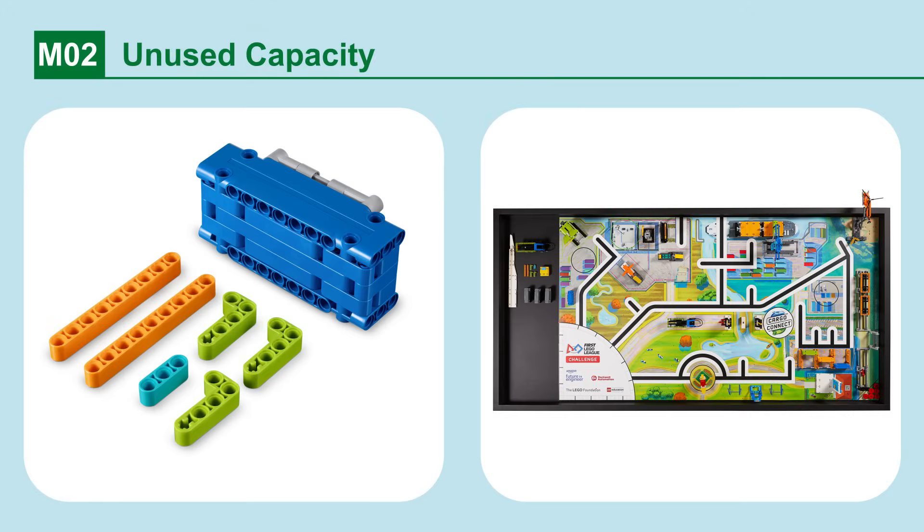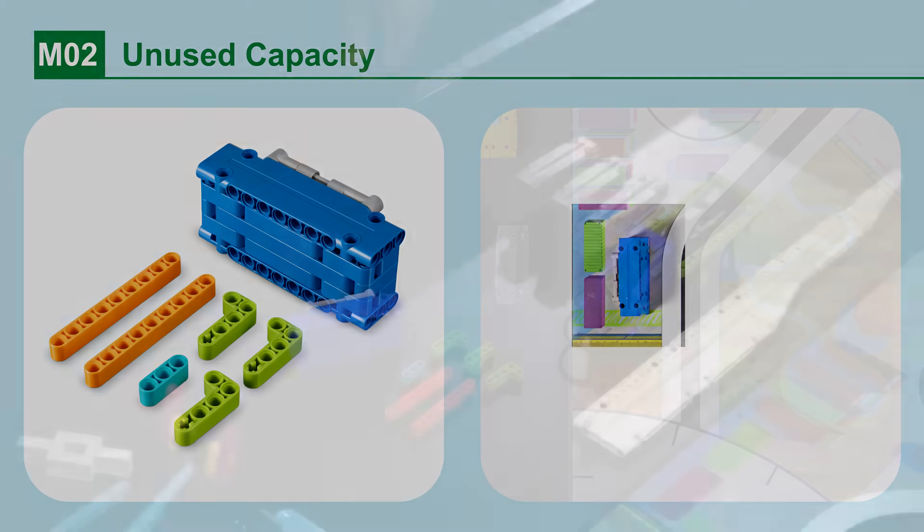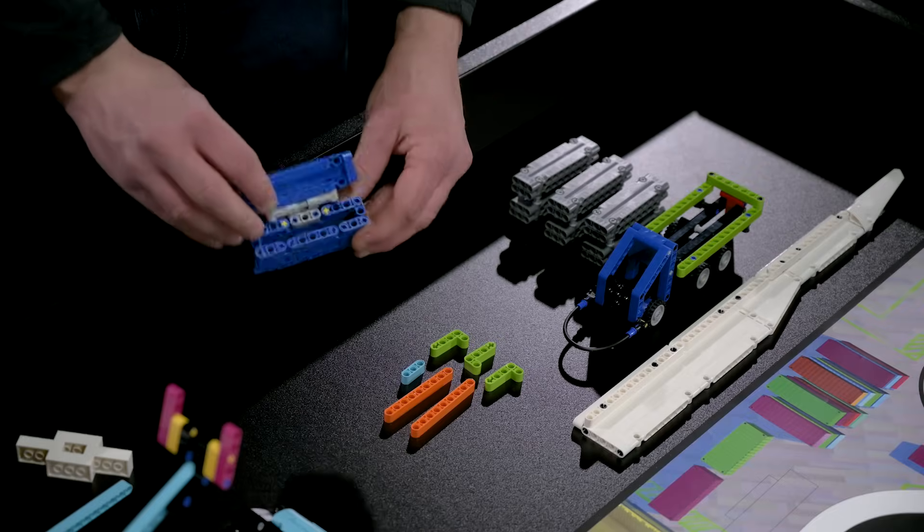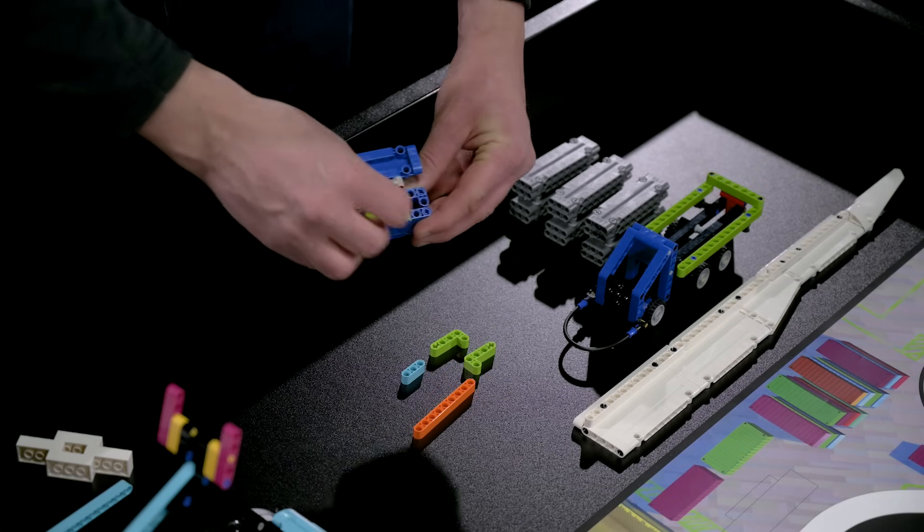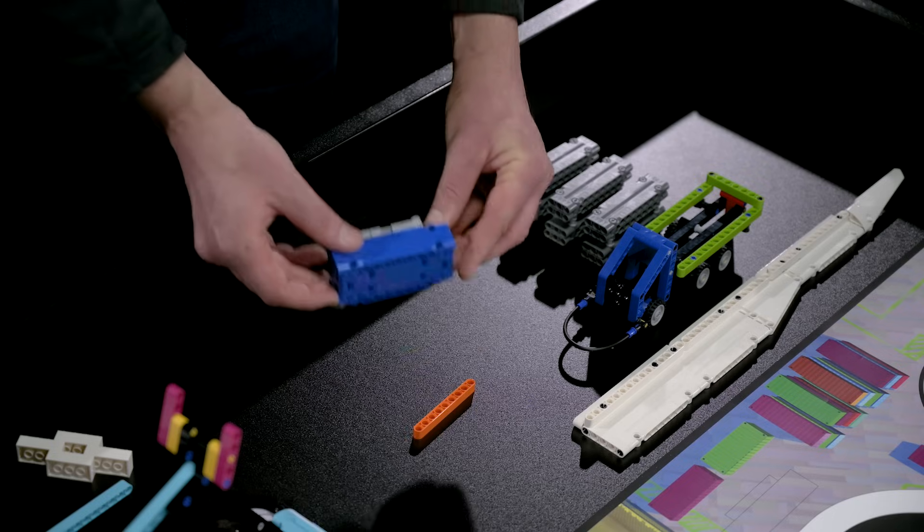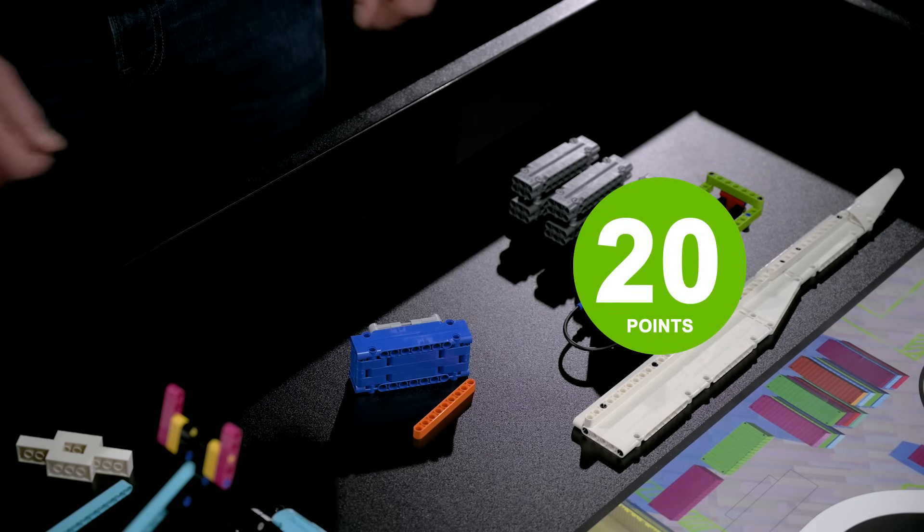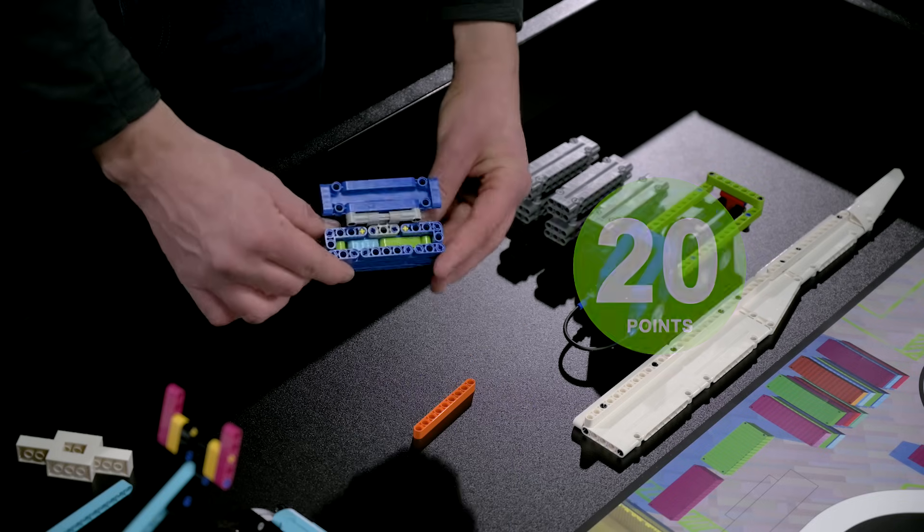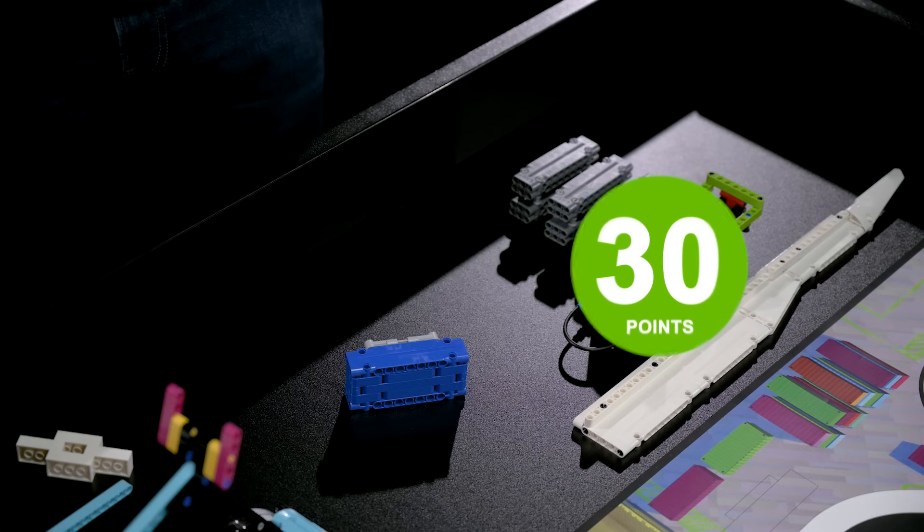Mission 2. Unused capacity. Fill the container with its contents. While the hinged container is in home, a team member can fill it with the contents. If the container is closed and partly full of contents. If the container is closed and completely full of contents.